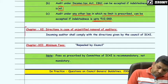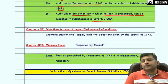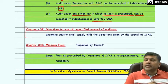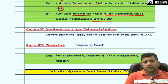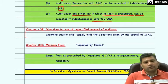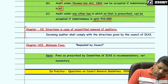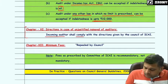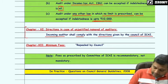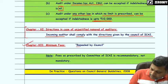Chapter 11 deals with directions in case of unjustified removal of the auditor. If any auditor is removed by a company without any reasonable grounds, the incoming auditor is required to comply with the directions if any given by the Council of ICAI.